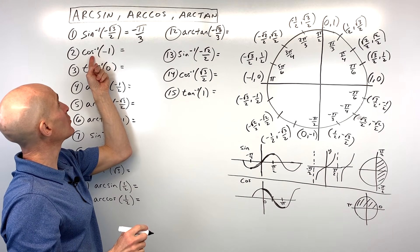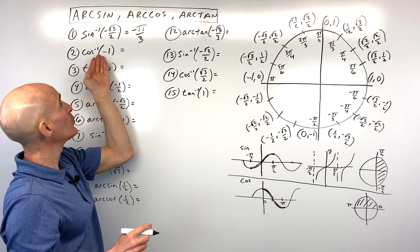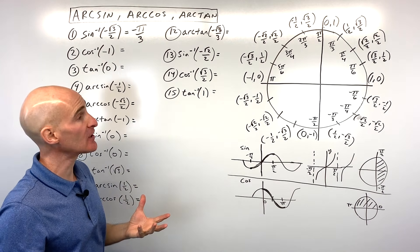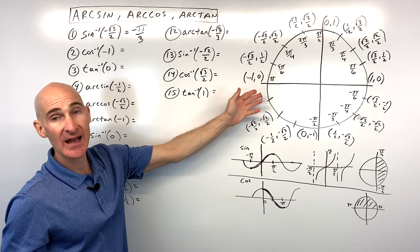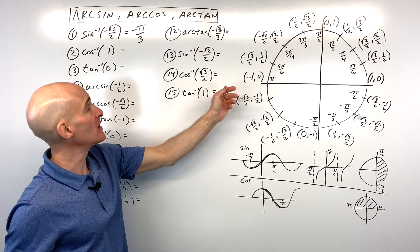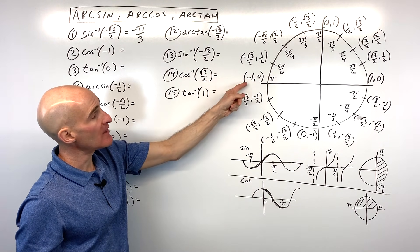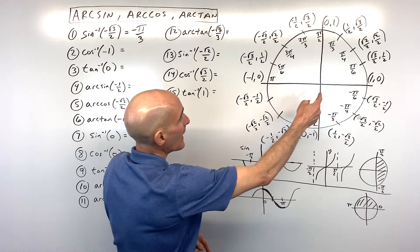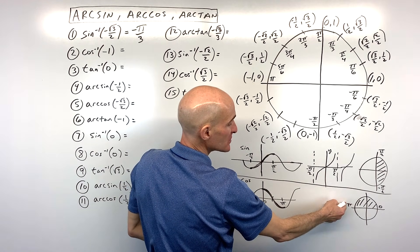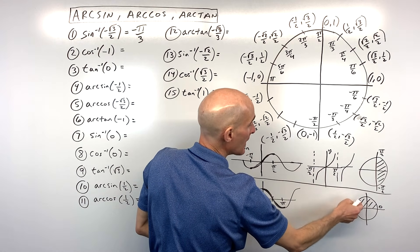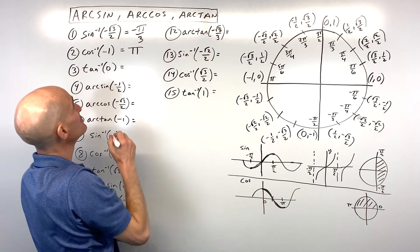For number two, what's the cosine inverse of negative one — meaning cosine of what angle equals negative one? On the unit circle, cosine is the x-coordinate. Where is the x-coordinate negative one? That's at pi. And remember, cosine inverse is restricted from zero to pi, so the answer is pi.